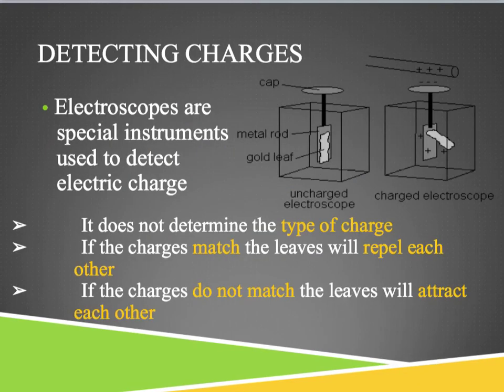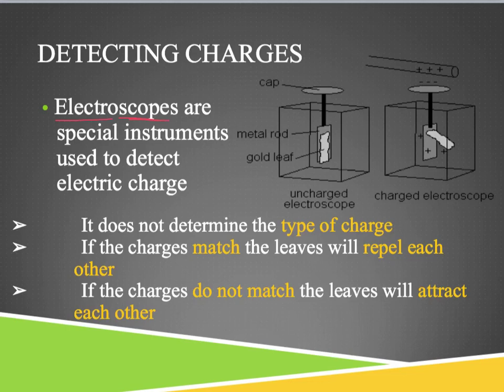In order to see if an object has a charge on it, we can use something called an electroscope. 'Electro' tells us electricity and 'scope' allows us to see something. This doesn't tell us what type of charge it is, so we wouldn't know if it was negative or positive. But if the charges match between the object and the metal rod, it would cause the gold leaf or gold foil to repel and move away from the metal rod. If the charges don't match, the leaves would attract each other because they're opposites and cling to the metal rod.